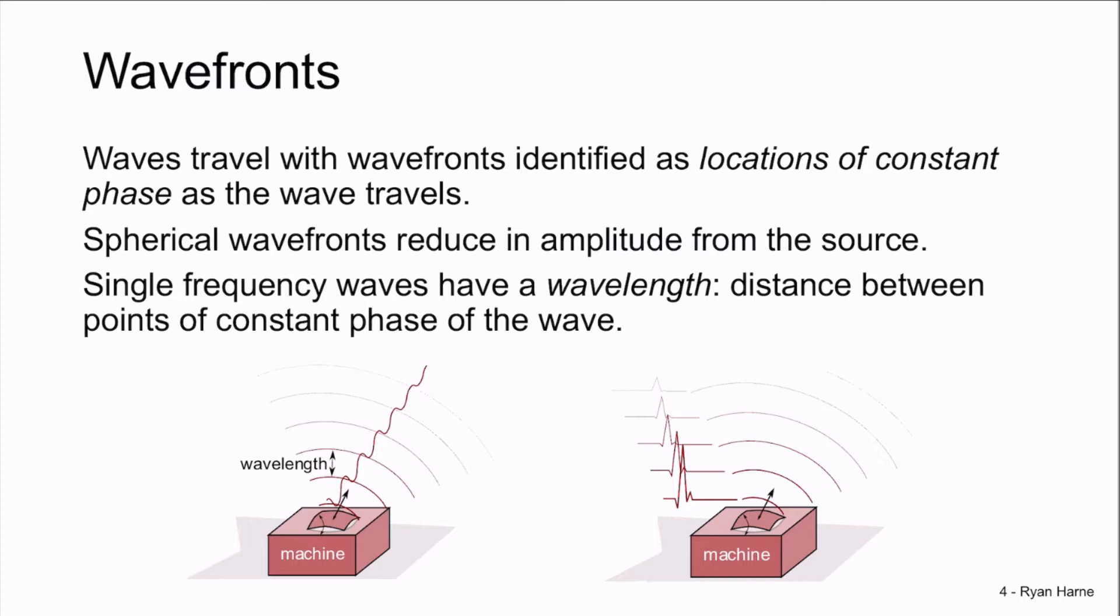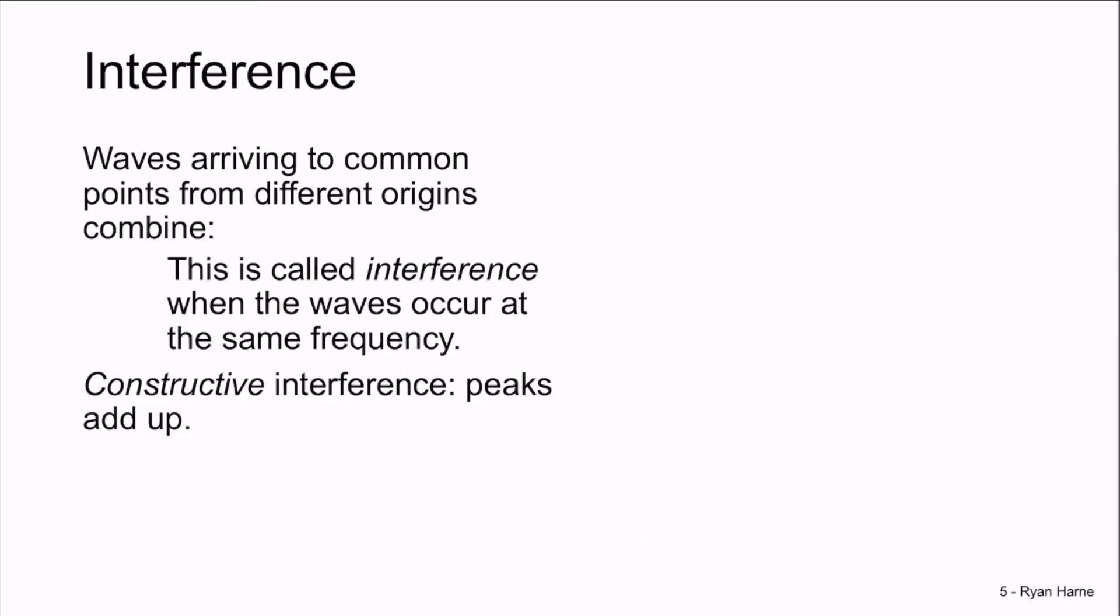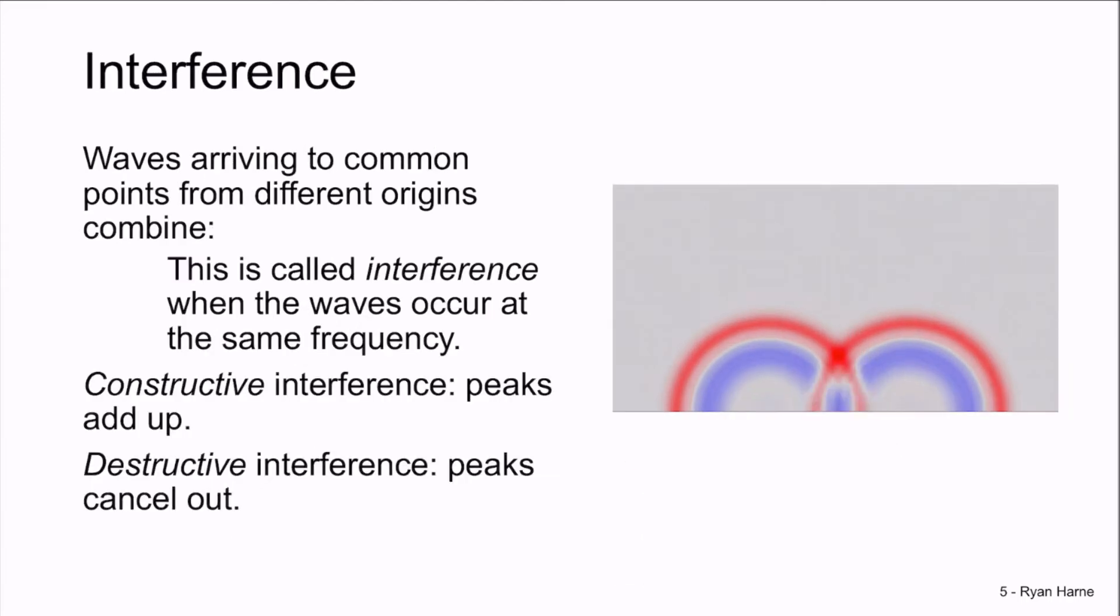These wavefronts have some other characteristics as well. They interfere. Waves arriving at common points from different origins will combine, and this combination is called interference, when the waves occur at the same frequency.